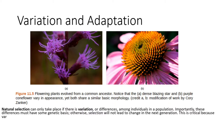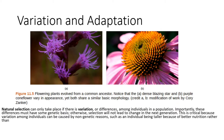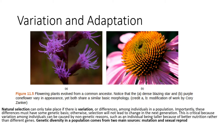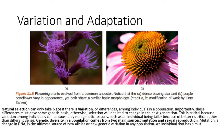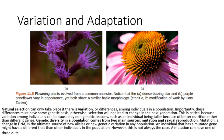Variation among individuals can be caused by non-genetic reasons, such as an individual being taller because of better nutrition rather than different genes. Genetic diversity in a population comes from two main sources: mutation and sexual reproduction. Mutation — a change in DNA — is the ultimate source of new alleles or new genetic variation in any population. An individual that has a mutated gene might have a different rate than other individuals in the population.